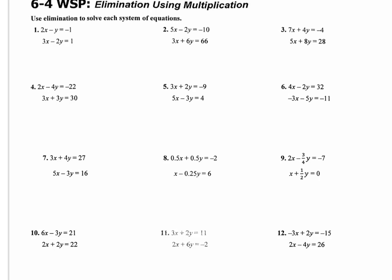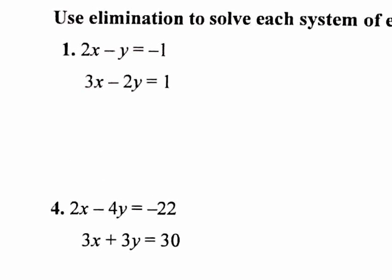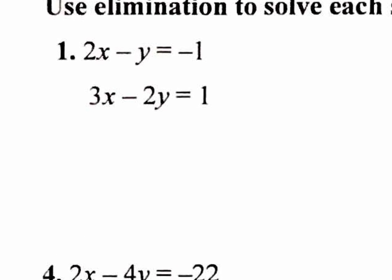On this worksheet 6.4, it's the same thing as 6.3. The only difference is that we're going to be manipulating either one or more equation. So again, this is called the elimination method because you either want the X's to eliminate or the Y's to eliminate. So in this case, would it be easier to cancel out the X's or the Y's?